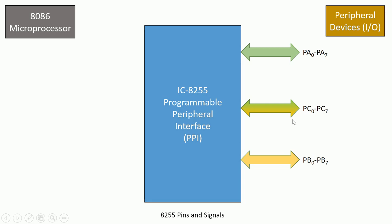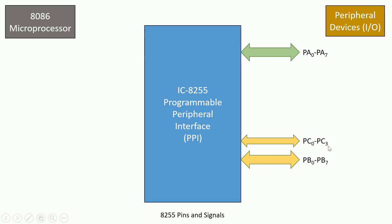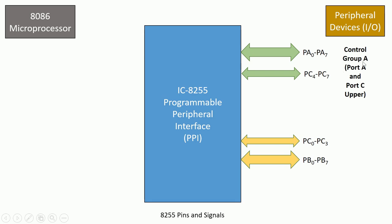Port C is further divided into two parts of four bits each. Port C lower is PC0 to PC3, and Port C upper is PC4 to PC7. These are controlled by two different control groups. Control Group A controls Port A and Port C upper — that is PA0 to PA7 and PC4 to PC7. Control Group B controls Port B (PB0 to PB7) and Port C lower (PC0 to PC3).